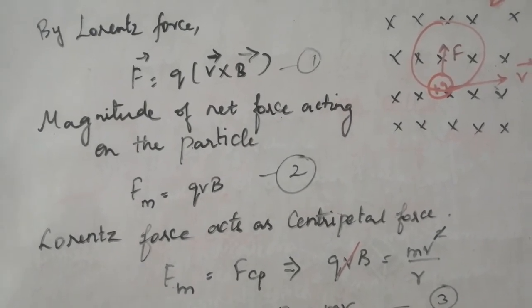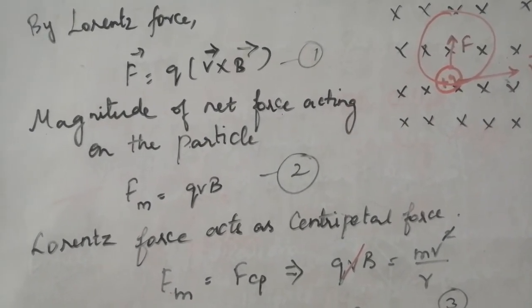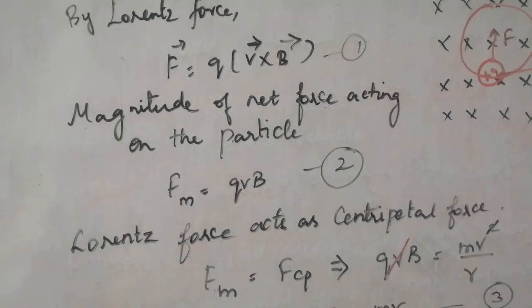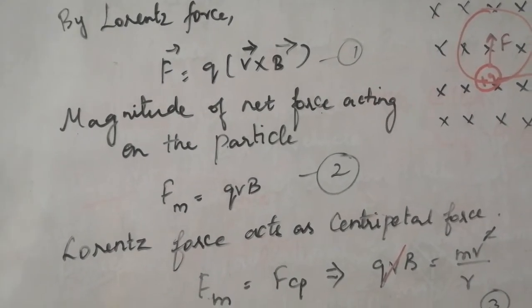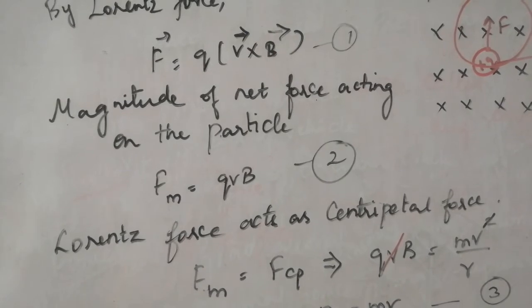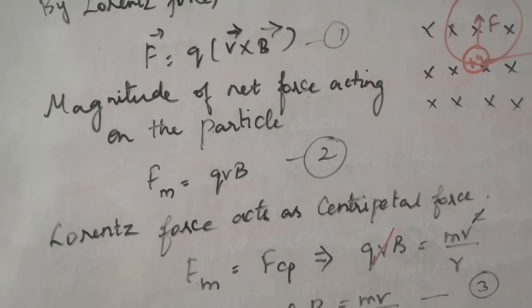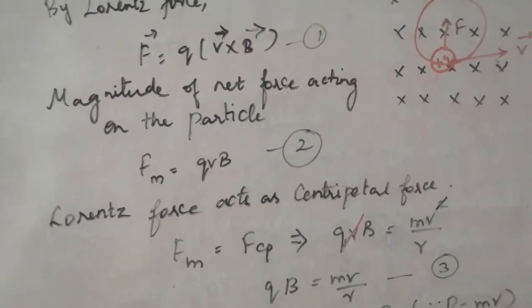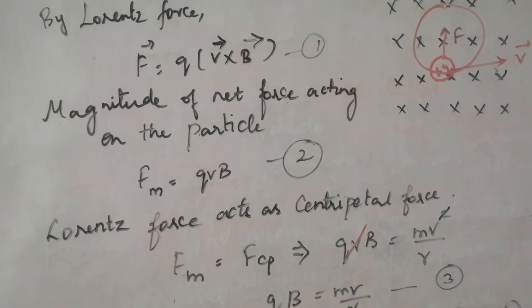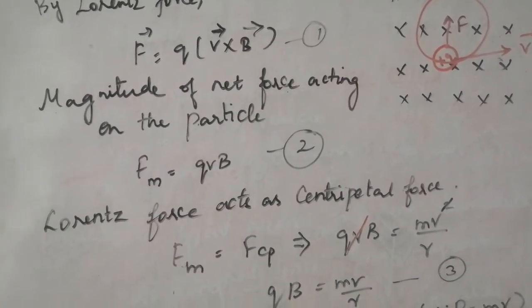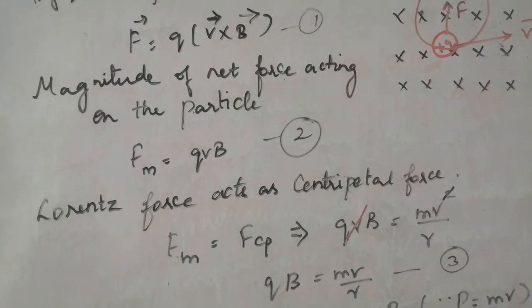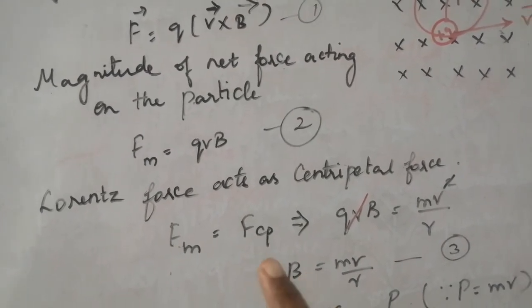Then this can be written as the magnitude alone. If you consider the magnitude of the net force, Fm equal to QVB. Let this be equation number 2. As we said, this Lorentz force is acting as a centripetal force now. So Lorentz force is equal to centripetal force, that is Fm equal to Fcp.